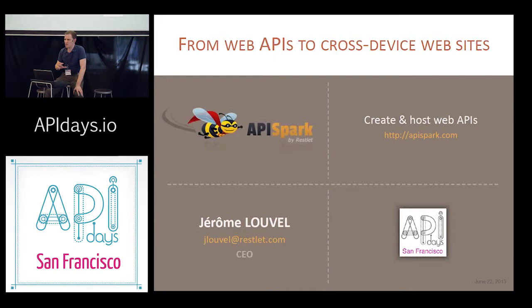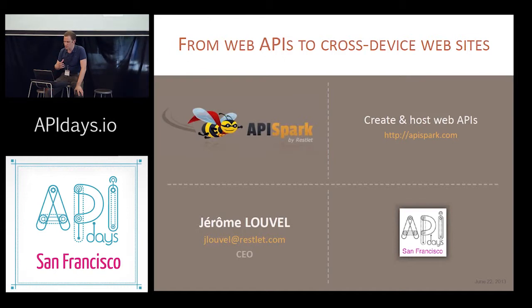Today I will speak about cross-device websites, trying to look beyond web APIs and see where we are going in terms of the API economy, which is the main theme of this conference. A few words about Restlet: I created the first Restlet for Java back in 2005. We grew a large community, and two years ago we started to work on the platform as a service called API Spark.